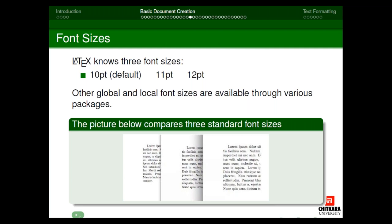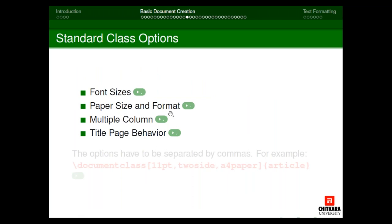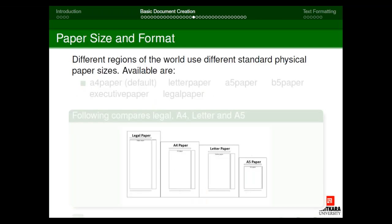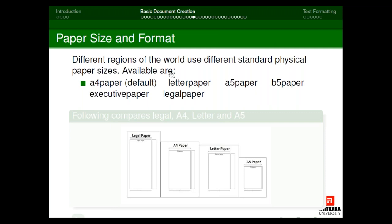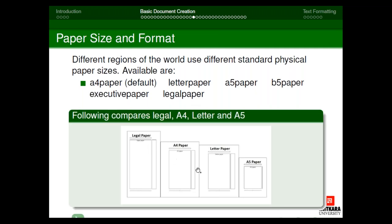Paper size is another class option. Available sizes include A4 (default), letter, A5, B5, executive, and legal paper. In Microsoft Word you must manually configure these settings, but in LaTeX you simply write the paper size as an option — LaTeX automatically designs the format and layout. This makes formatting much more convenient.